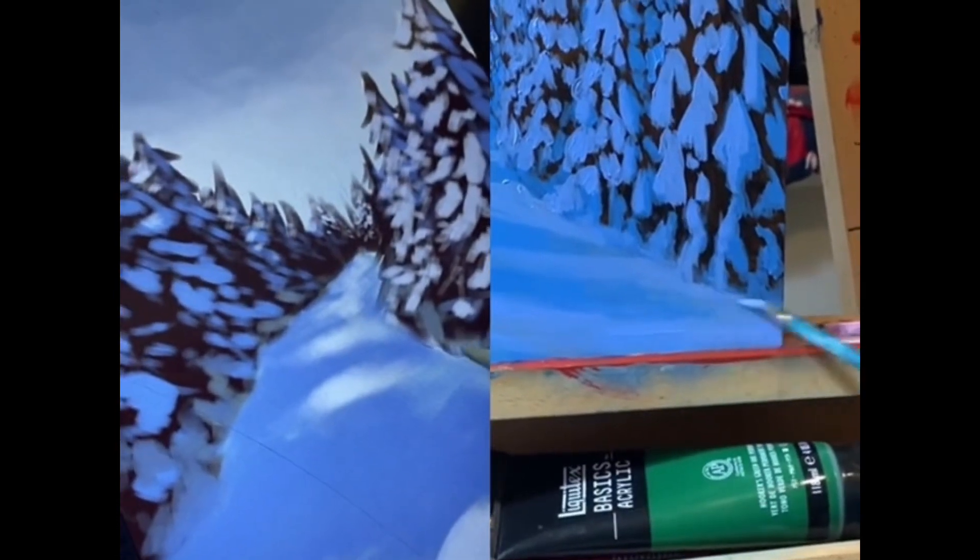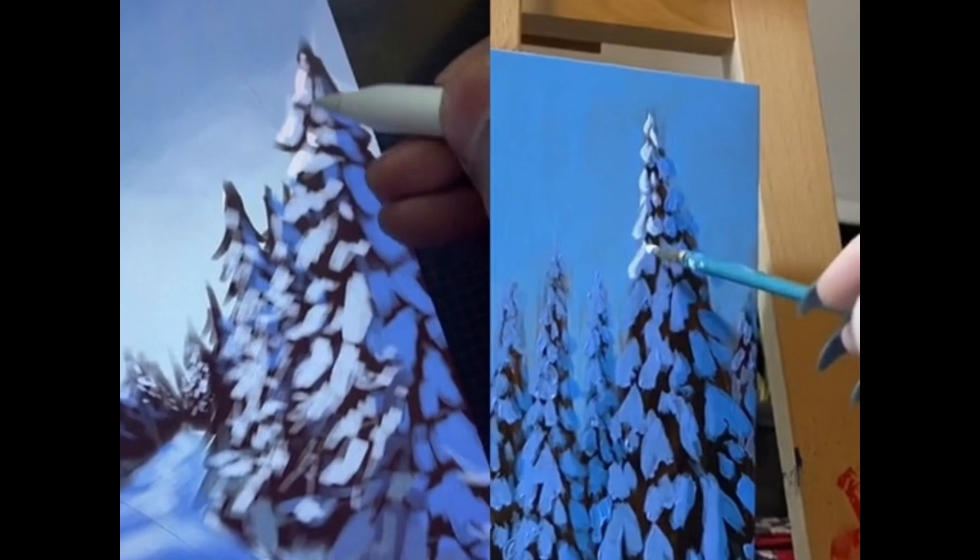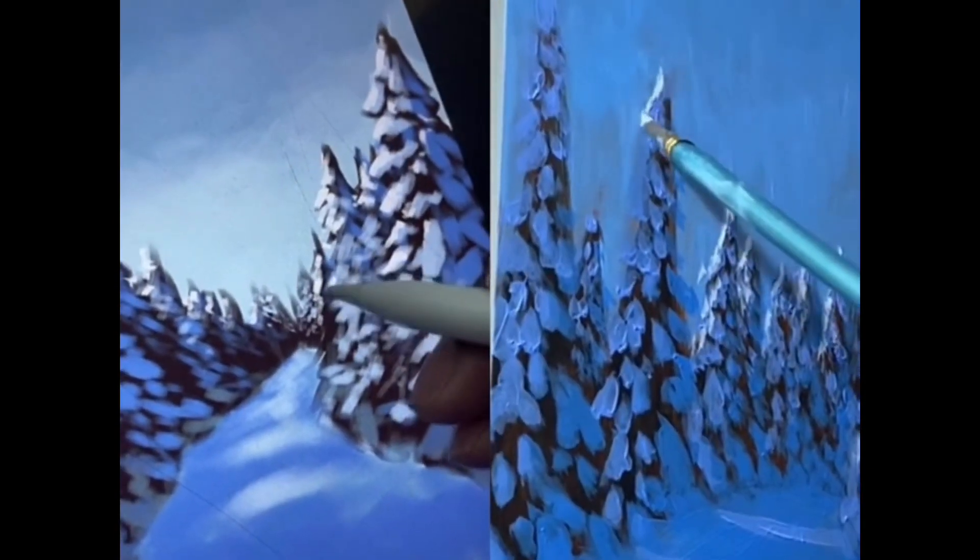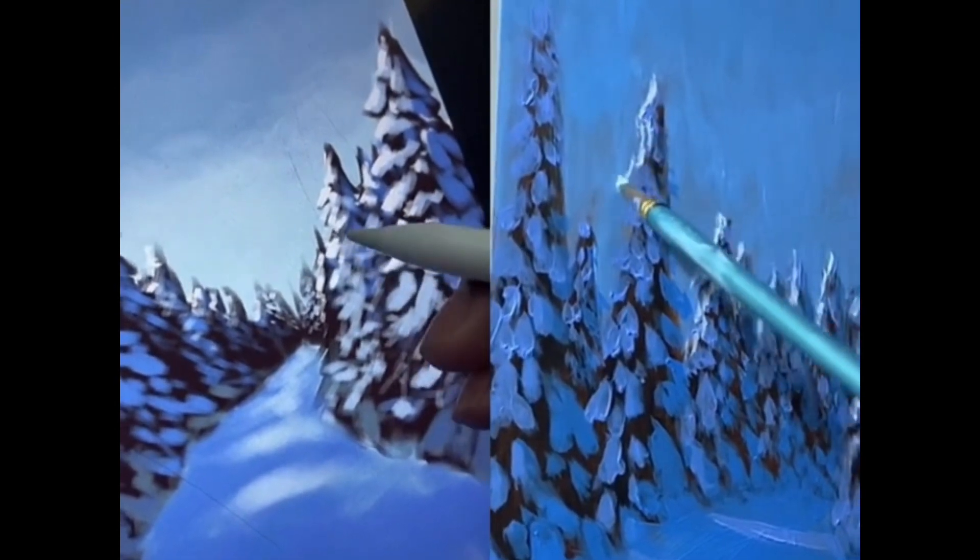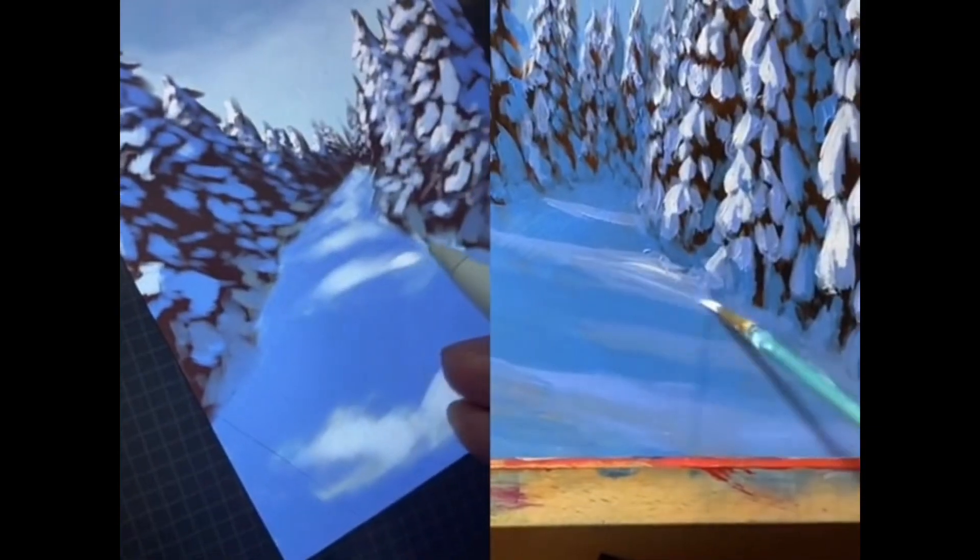Lastly, I go in with my off-white and paint the glistening snow in direct sunlight. I'm only using this on the leftmost side of every tree because that's the direction my light is coming from. I also use this to paint the parts that are really glistening in the sun.